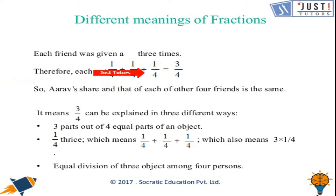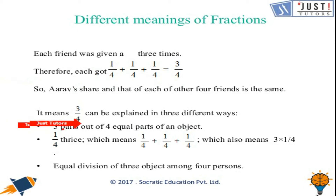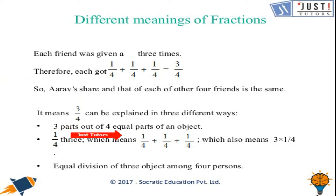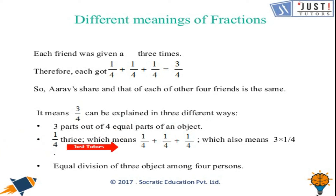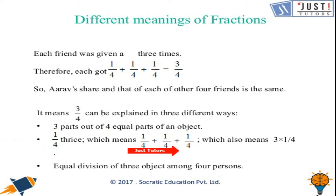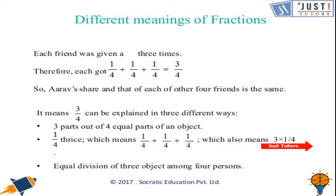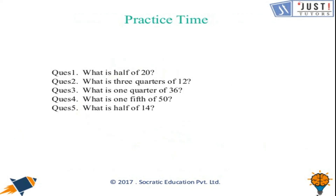Each friend was given three times one quarter: one quarter plus one quarter plus one quarter equals three quarters. This means three quarters can be explained in three ways: three parts out of four equal parts of an object; one quarter taken three times (one quarter plus one quarter plus one quarter); or three times one quarter.